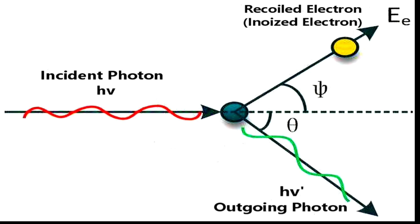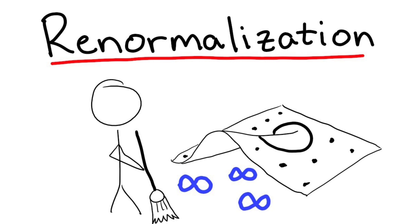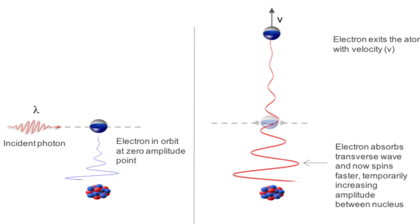QFT also uses a special procedure called renormalization, which allows us to get rid of the infinities and ambiguities that arise in some calculations by adjusting some parameters and constants to match the experimental data. For example, this diagram shows how an electron can emit and reabsorb a virtual photon, which affects its mass and charge.